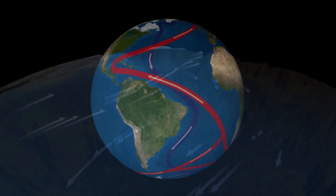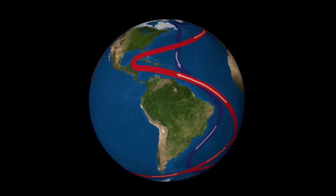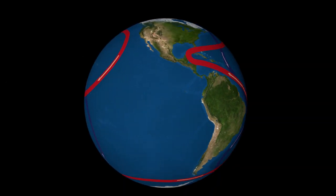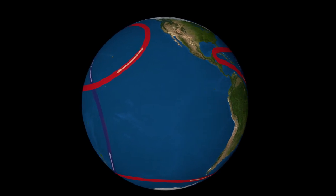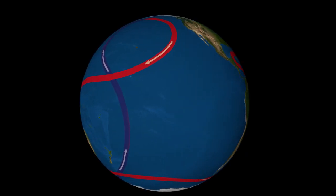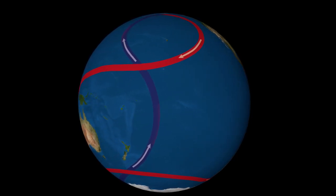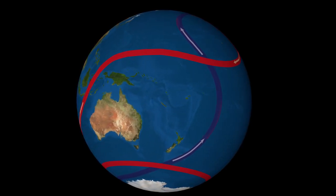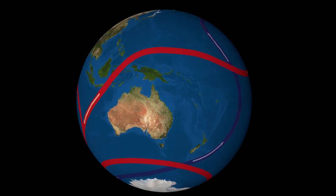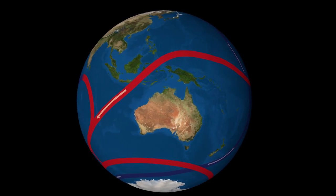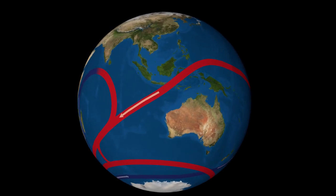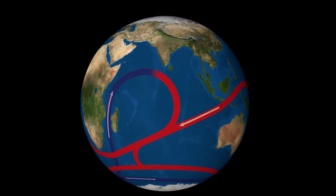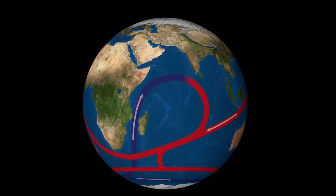Stommel put together the first conceptual model of the thermohaline circulation, in which the sinking of dense cold waters in the Norwegian Sea and Weddell Sea drive the global ocean circulation, often referred to as the global ocean conveyor belt.